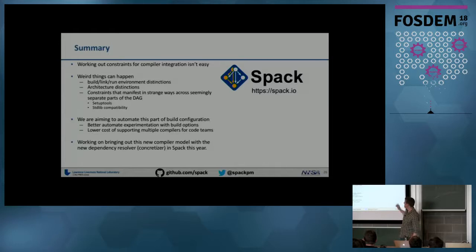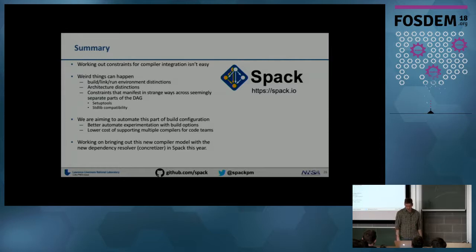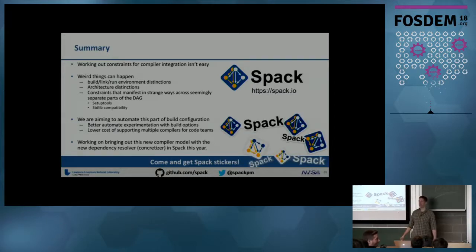That's the summary. We're working out constraints for compiler integration and it's not easy — weird and surprising things can happen. Cross-compiling can affect how your Pythons need to be synced between front end and back end, and you have to add additional dependencies to the DAG. We're trying to make this part of SPAC's build configuration, hoping it will make it easy to write a single source package you can compile in lots of different ways on some pretty exotic machines.